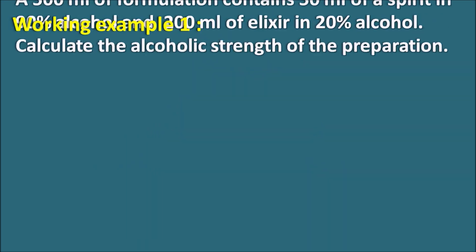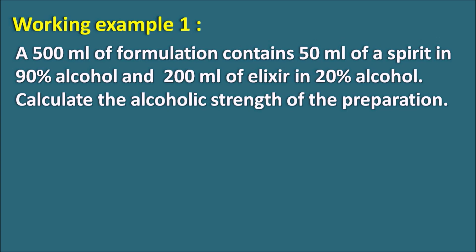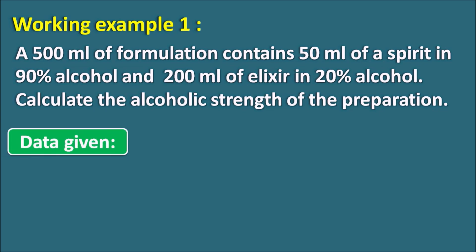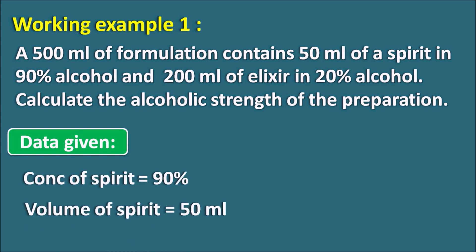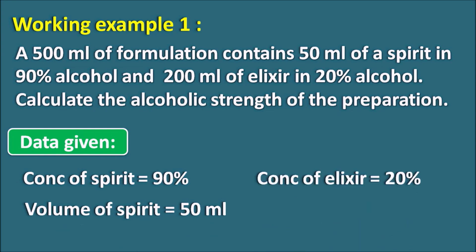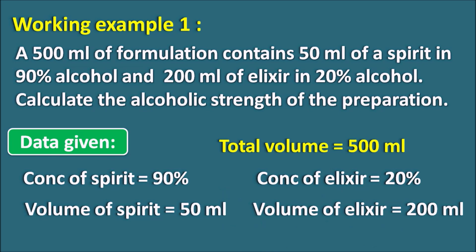Let us start with working example 1. A 500 ml formulation contains 50 ml of a spirit in 90% alcohol and 200 ml of elixir in 20% alcohol. Calculate the alcoholic strength of the preparation. Two preparations are given — spirit and elixir — both mixed to prepare 500 ml. The concentration of the spirit is 90% with a volume of 50 ml, and the concentration of the elixir is 20% with a volume of 200 ml. The final volume of the formulation is 500 ml.